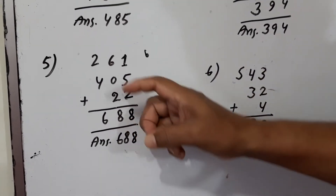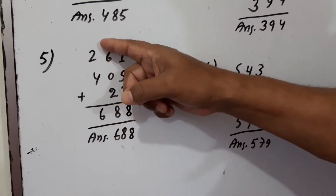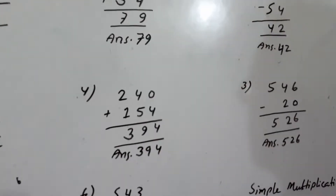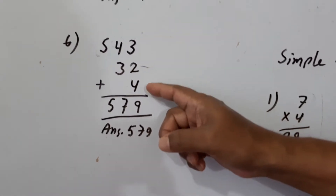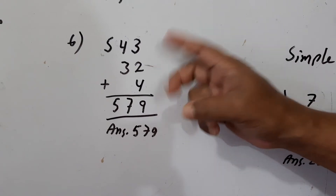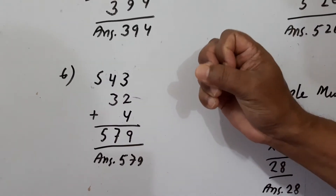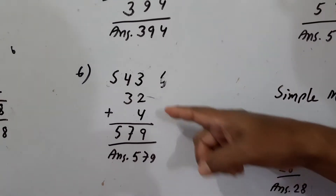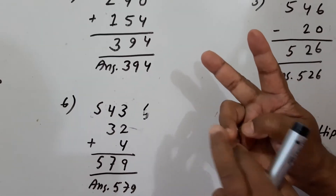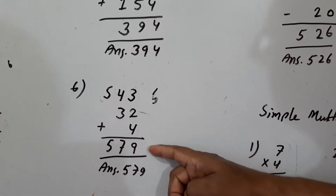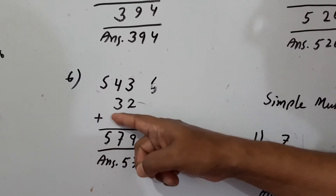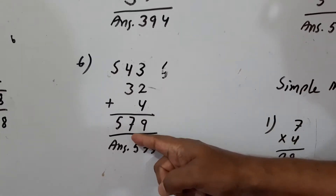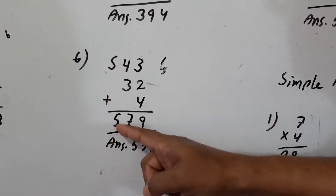This is 2 and this is 4. Take 2 in hand: 4, 5, 6. Plus 32 plus 4. This is 3 and this is 2, take 2 in hand: 3, 4, 5. Now this is 5. Take 4 in hand: 5, 6, 7, 8, 9. Now this 4 and this 3, take 3 in hand: 4, 5, 6, 7. Now 7. This is 5, 5 plus 0 is 5. Answer is 579.